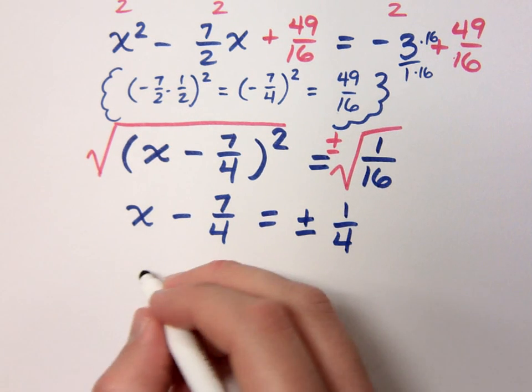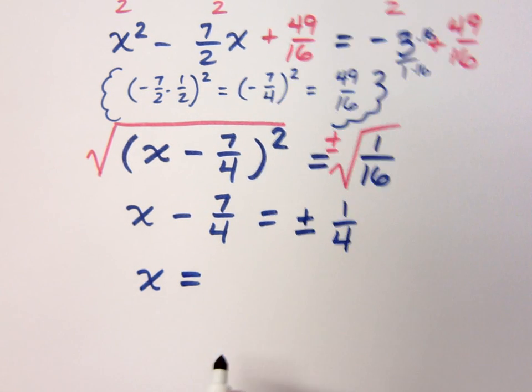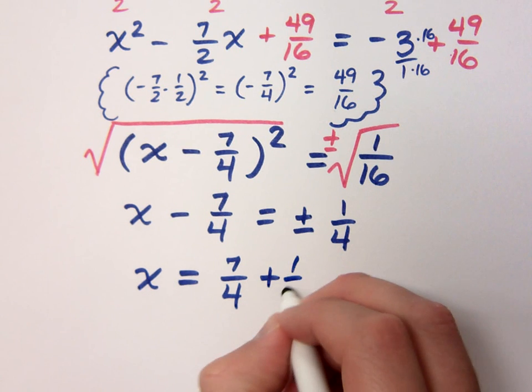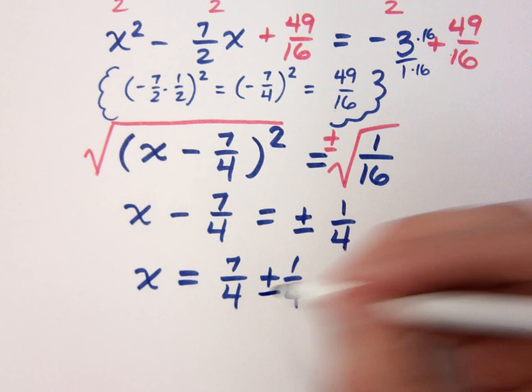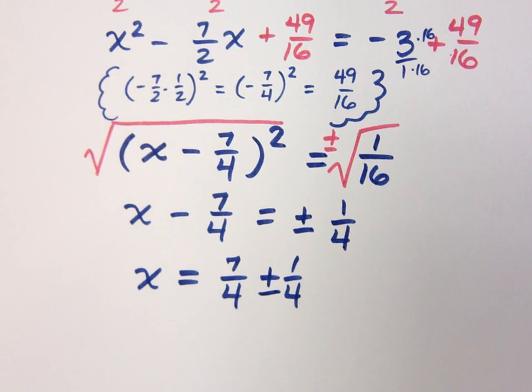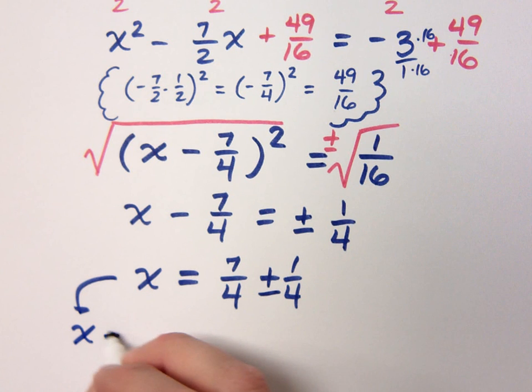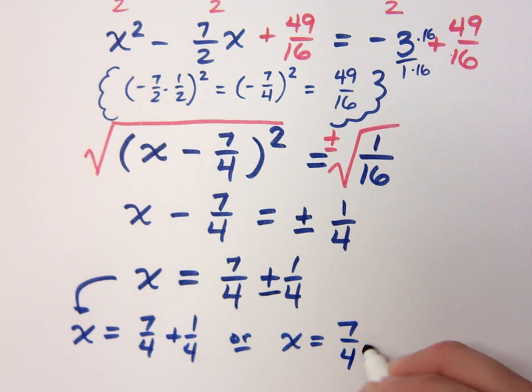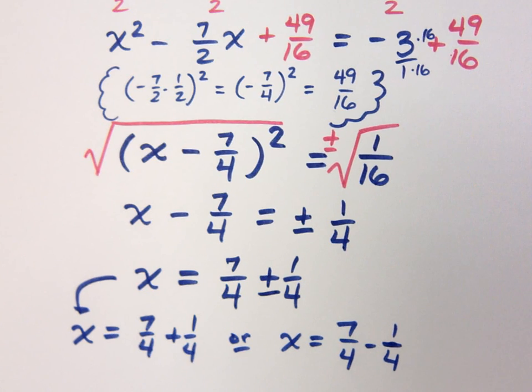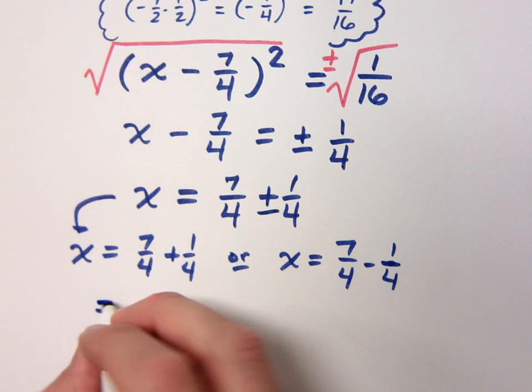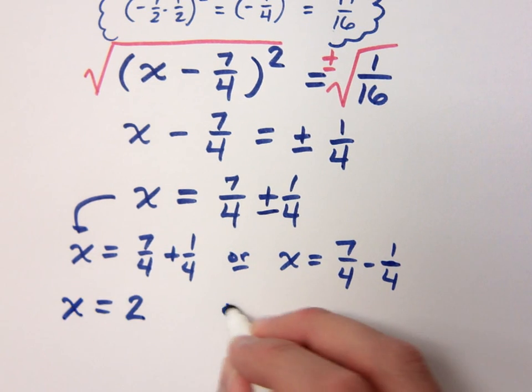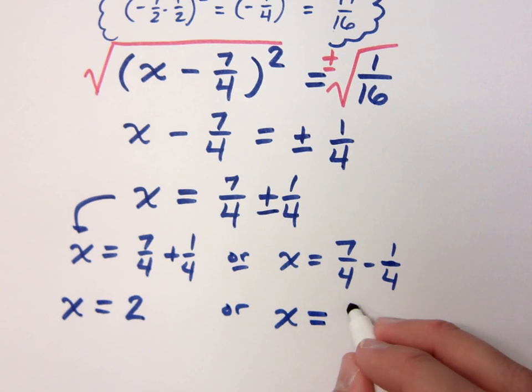Well, now I've got to finish this guy. How do I finish this? By adding 7 fourths to the side. When I move to the right side, where does it go? Before the plus or minus. So it's a positive 7 fourths plus or minus 1 fourth. I need to separate this. So when I separate, I get x equals 7 fourths plus 1 fourth, or x equals 7 fourths minus 1 fourth. What do you get for the left one? I get 8 fourths, which is just 2. 7 minus 1 gives me 6 over 4. That reduces to give me 3 halves.